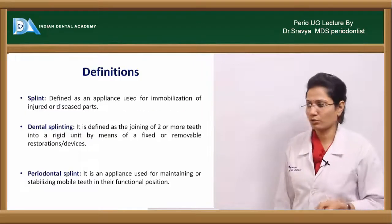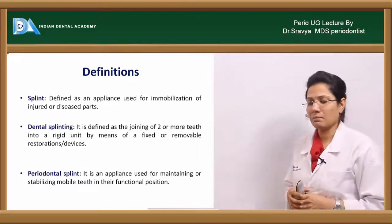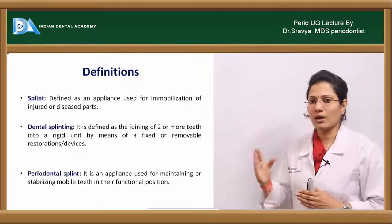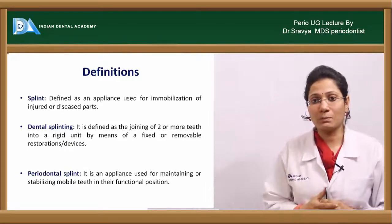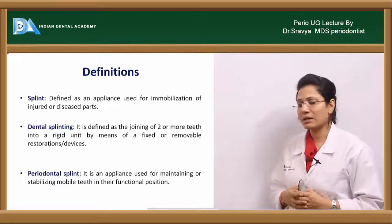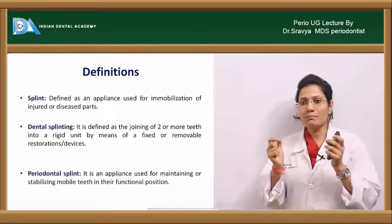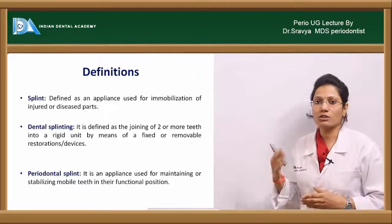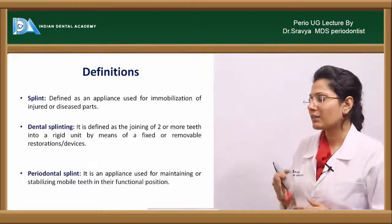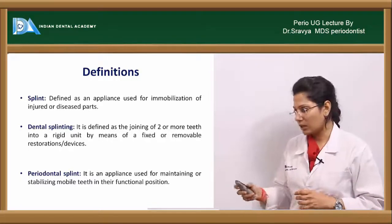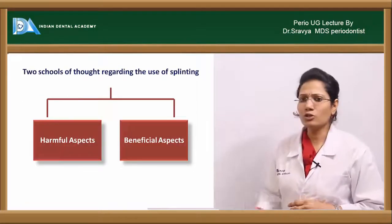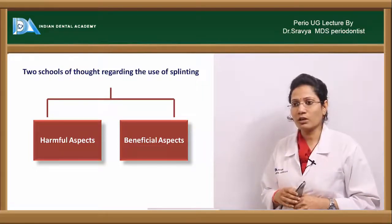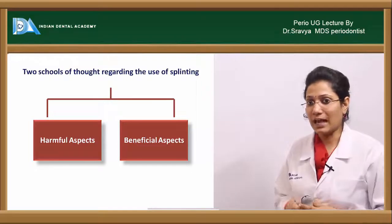A splint is defined as an appliance used for immobilization of an injured or diseased part. A dental splint is defined as joining two or more teeth with some rigid material by means of either fixed or removable restorations or devices. A periodontal splint is an appliance used for maintaining or stabilizing mobile teeth in their functional position. There are two schools of thought regarding splints: one holds that splints have a harmful effect, and the other that they have beneficial effects.